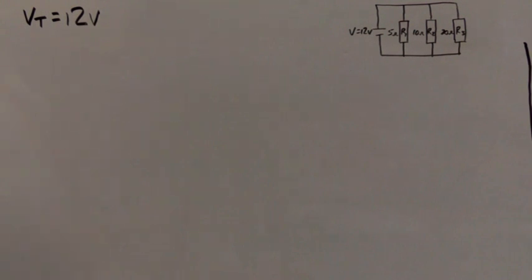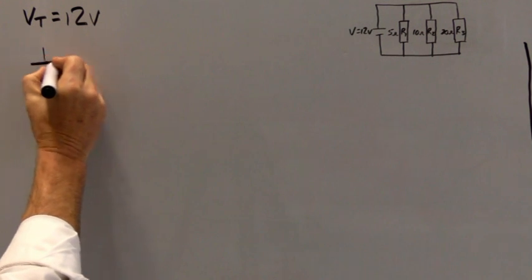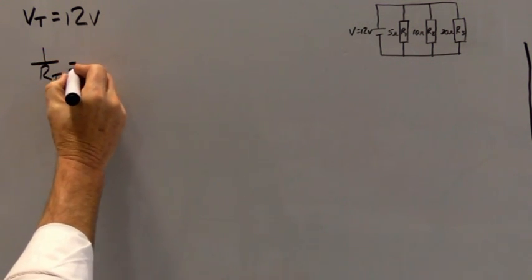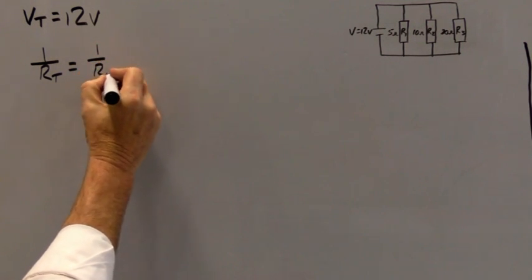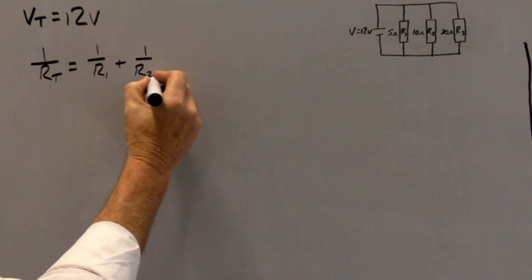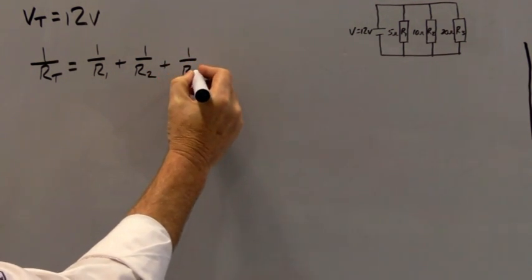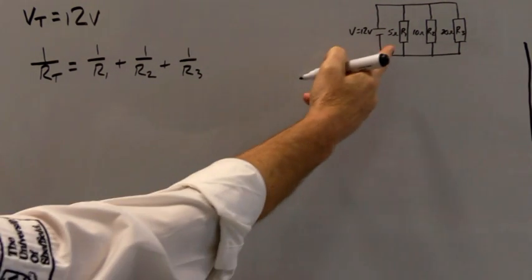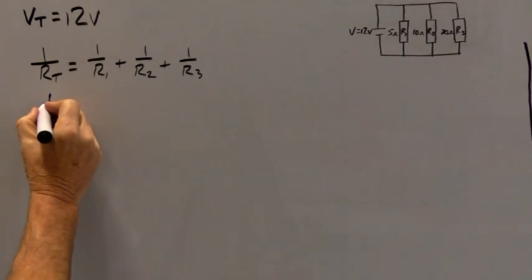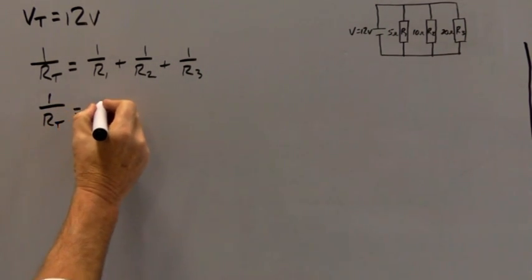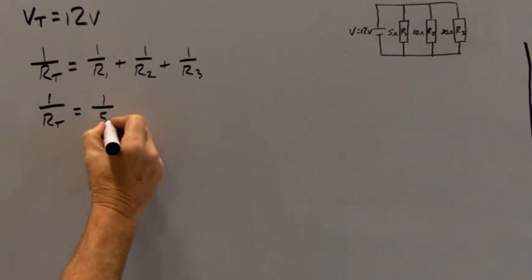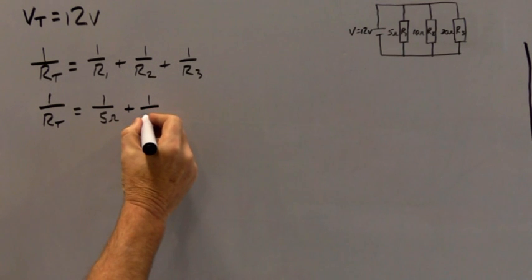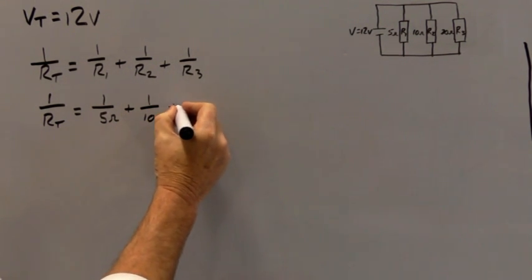The second thing we need to find is the total circuit resistance, and for that we use this formula: 1 over RT equals 1 over R1 plus 1 over R2 plus 1 over R3. We have the values for R1, R2, and R3, so we can say: 1 over RT equals 1 over 5 ohms plus 1 over 10 ohms plus 1 over 20 ohms.